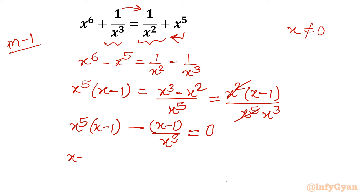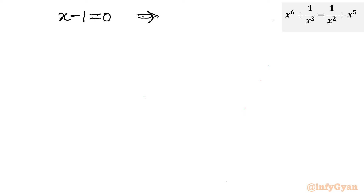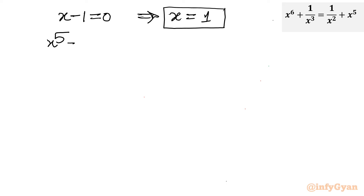Now (x - 1) is common. Taking it out gives (x - 1)[x^5 - 1/x^3] = 0. From here we get two equations: x - 1 = 0, giving x = 1 as our first real solution. The second equation is x^5 - 1/x^3 = 0.